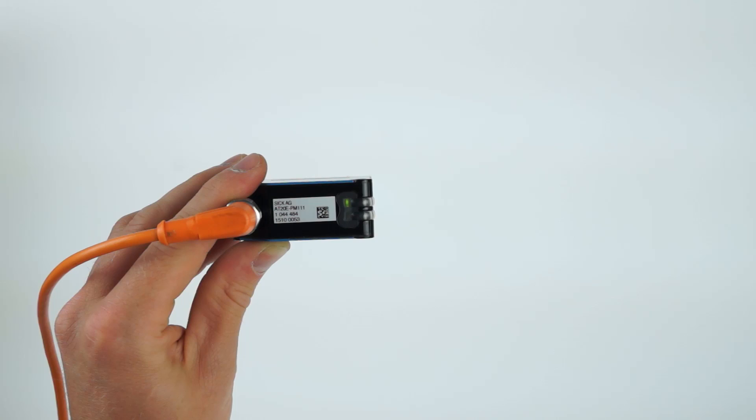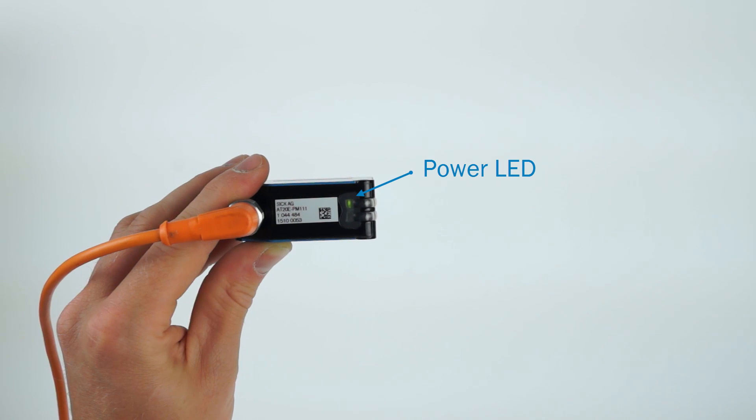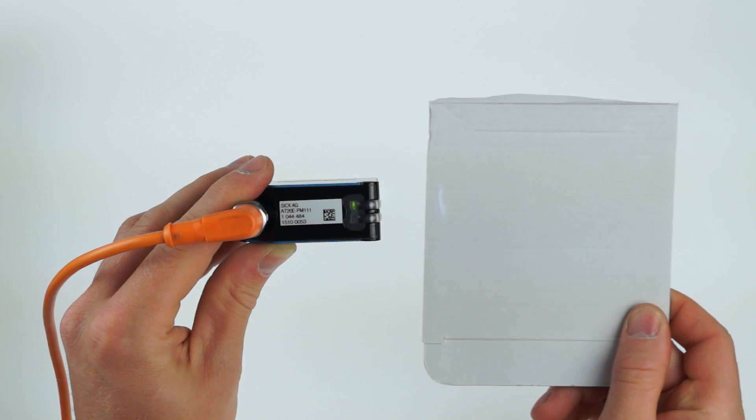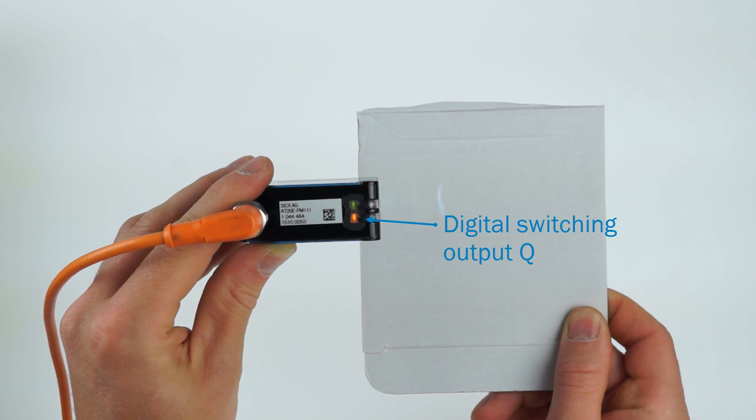The very good visible LEDs show the following states. Green LED is the power LED, which is always on if the sensor is powered up. Yellow represents the digital switching output Q, which shows that an object is present.